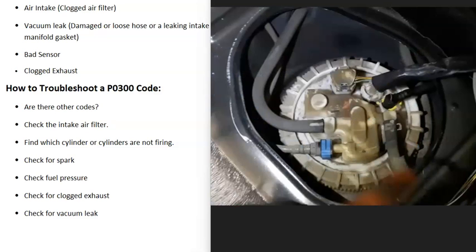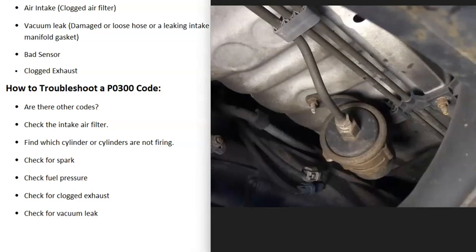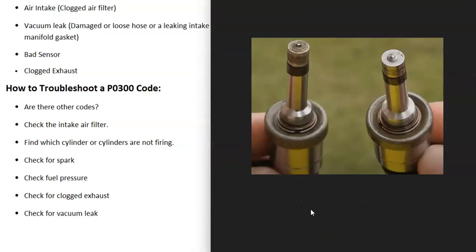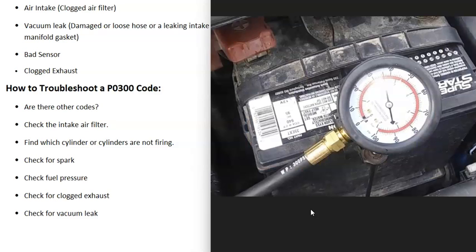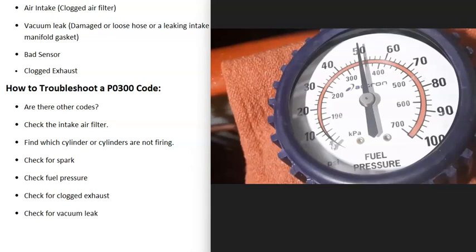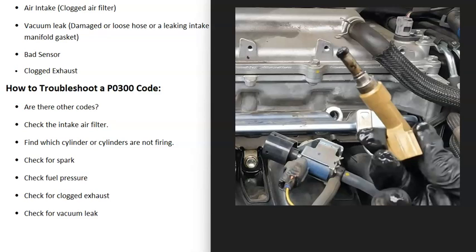If the misfiring cylinders are getting spark, the next step is to check fuel delivery — the fuel pump, fuel filter, and injectors. One method is a fuel pressure test: attach a fuel pressure gauge to the fuel rail, start the engine, and check the pressure against your vehicle's rated spec. For example, if the engine should run at 60 psi but reads 50 psi, that indicates a weak fuel pump or clogged filter. If fuel pressure is correct, move on to testing the injectors — you can swap a suspect injector with one from a known good cylinder and see if the problem follows, or test with a multimeter.